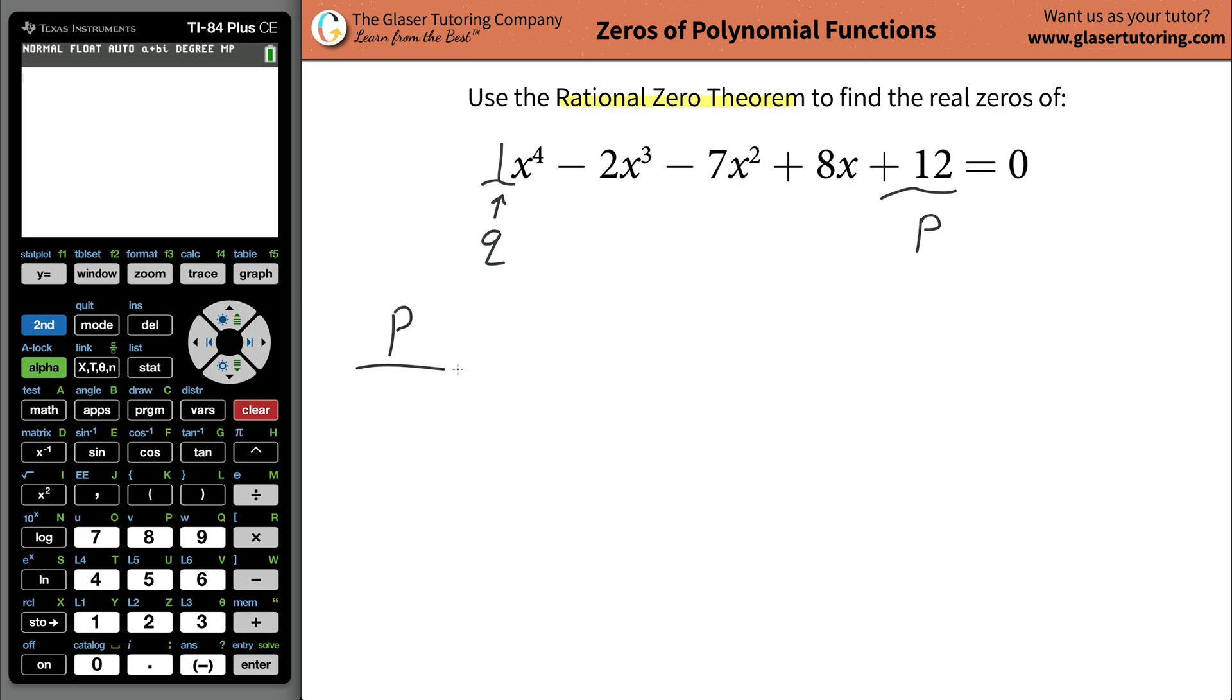Then take the p values divided by the q values, and this will give you a list of possible rational real zeros. Not all of them will work. Maybe none will work. We'll see. But that's the idea.